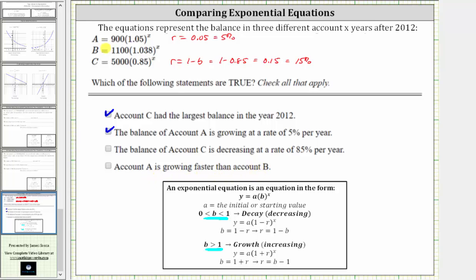We already know account A is growing at a rate of 5% per year. Looking at the second equation, notice how the base is 1.038, and because we have exponential growth, we know the base B is equal to one plus R, which means in this case, R is equal to 0.038, which as a percentage is 3.8%.